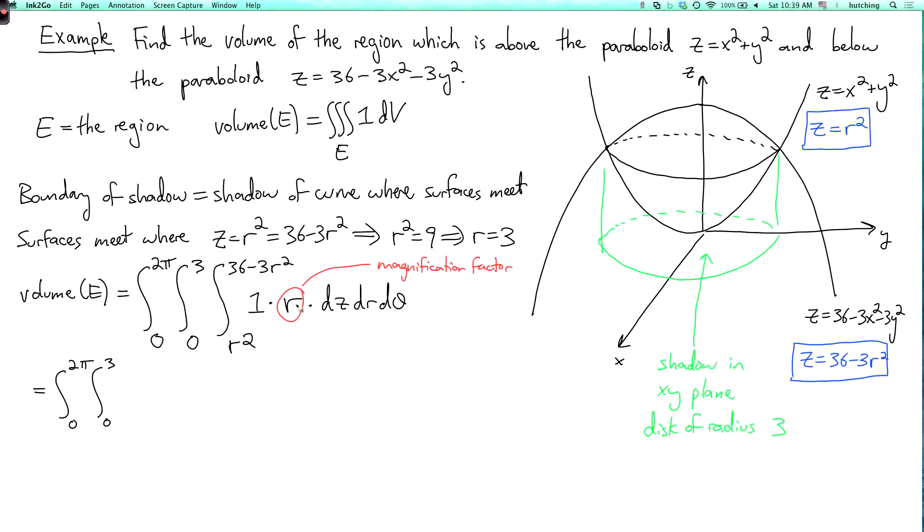So the integrand is a constant here because r and theta are fixed. So I just have r times the upper limit minus the lower limit, which is 36 minus 4r squared.